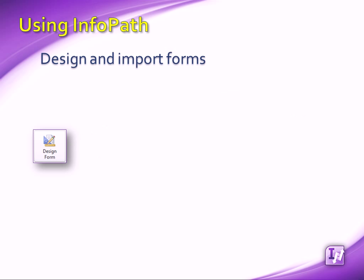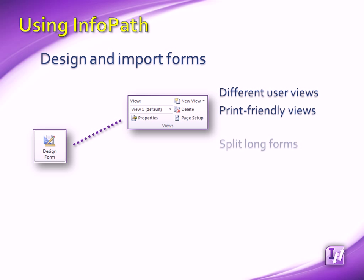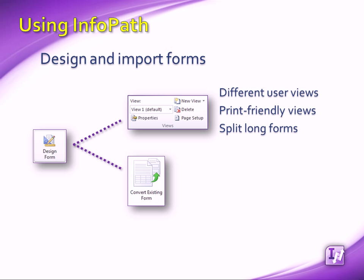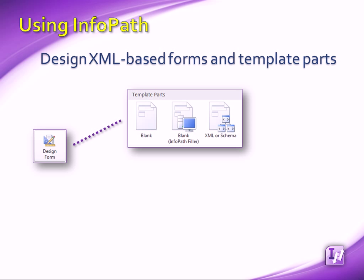We can design a single form template that includes multiple views, to show different versions of a form to different people based on their role in our organization, create a print-friendly view of a form, or split longer forms into multiple pages that users can navigate through. And with the import wizard, existing Microsoft Word or Excel forms are converted into InfoPath form templates. We can save time by creating template parts — portions of a form template that can be saved and reused in multiple form templates.